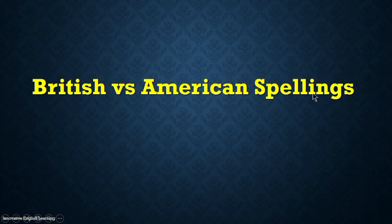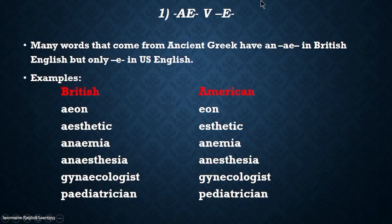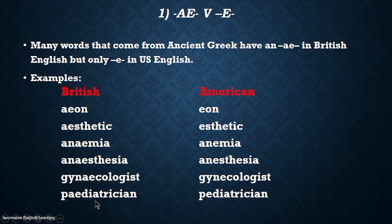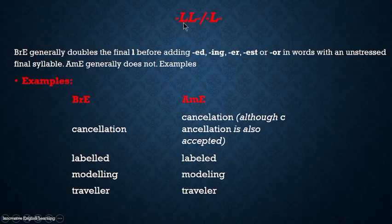First, British versus American spellings. The first difference is that in British English we have 'ae' while in American we have 'e'. Many words that come from ancient Greek have 'ae' in British English but only 'e' in US English. For example: aeon (ae-on) vs. eon, aesthetic vs. esthetic, anaemia vs. anemia, anaesthesia vs. anesthesia, gynaecologist vs. gynecologist, paediatrician vs. pediatrician.